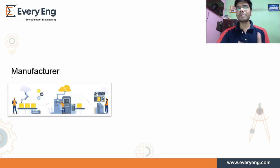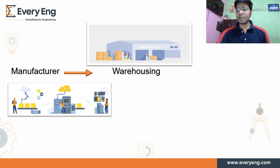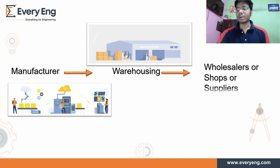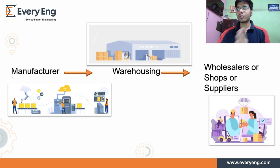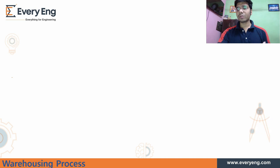Products come into the warehouse from manufacturing companies or vendor companies. These companies supply products into the warehouse, where we store them in inventory. When there is demand, we supply the product to suppliers, wholesalers, or shops. This is the supply chain: manufacturing to warehouse, warehouse to suppliers, and suppliers to consumers.